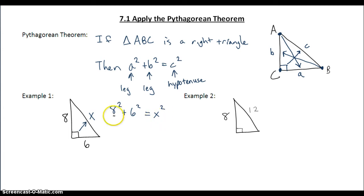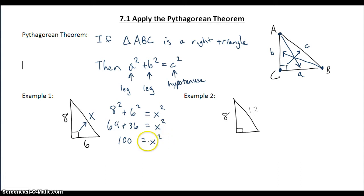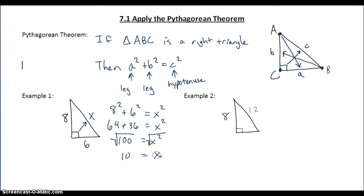Now I just need to solve for x. 8 squared is 64, 6 squared is 36, and 64 plus 36 is 100. To solve for x, I need to undo x squared by taking the square root. If I square root the right side, I have to square root the left side. The square root of 100 is 10, and the square root of x squared is x — these two operations undo each other. So I'm left with x equals 10.